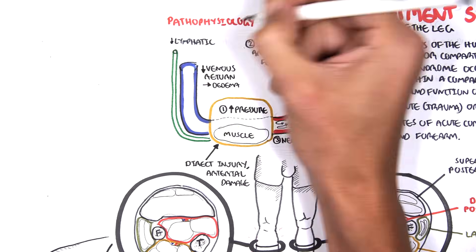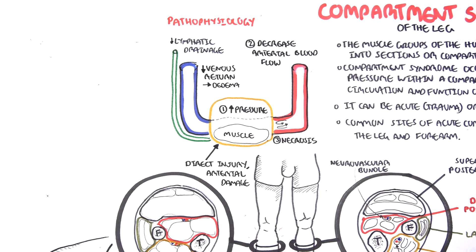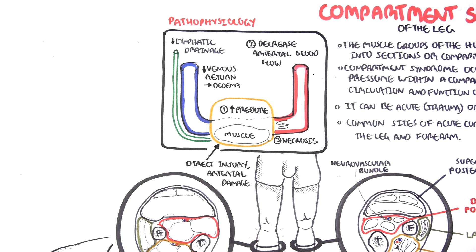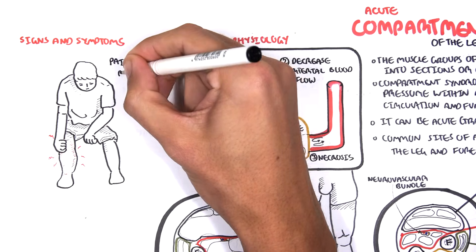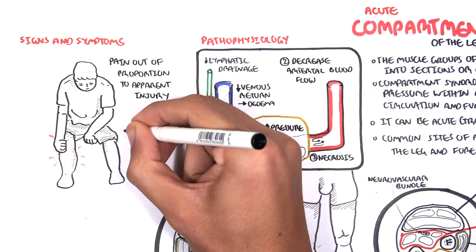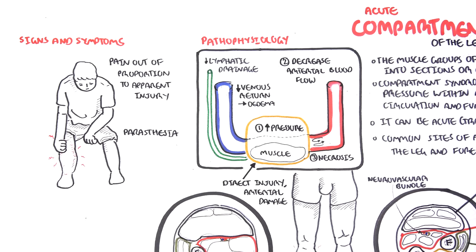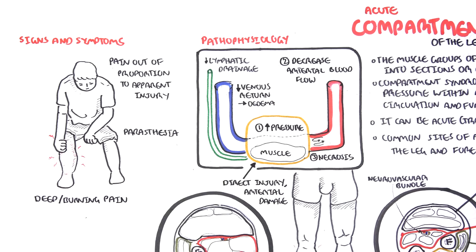With this build up in pressure and inflammation process we see the signs and symptoms of acute compartment syndrome, which includes mainly pain out of proportion to the apparent injury, paresthesia, and deep burning constant pain.